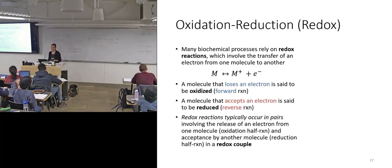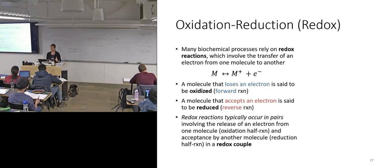Redox reactions typically occur in pairs - the release of an electron from one molecule, the oxidation half reaction, and acceptance by another molecule, the reduction half reaction. This is called a redox couple. Not the same as energetic coupling, which is a different mechanism we already talked about.